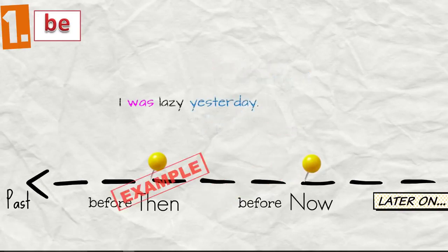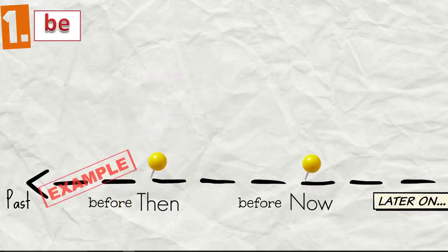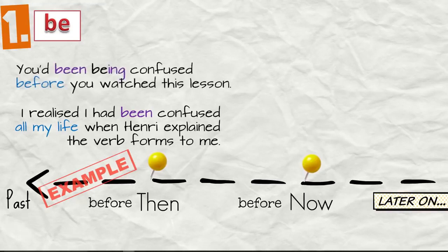The past. I was lazy yesterday. You weren't lazy. He was a bit lazy. You were being confused. And before then, I realized I had been confused all my life when Henry explained the verb forms to me. You'd been being confused before you watched this lesson.